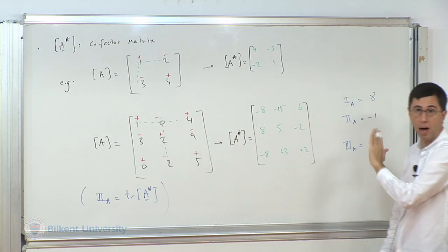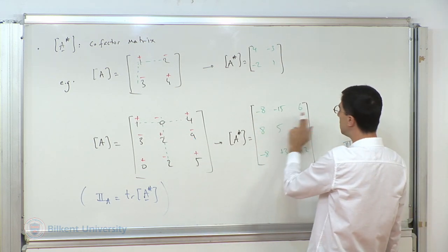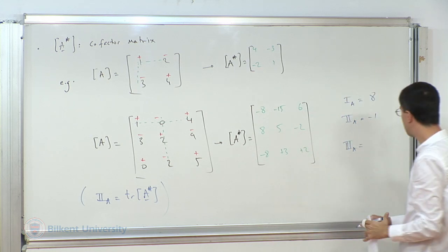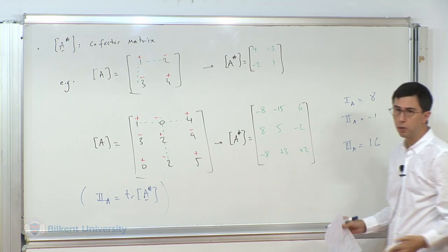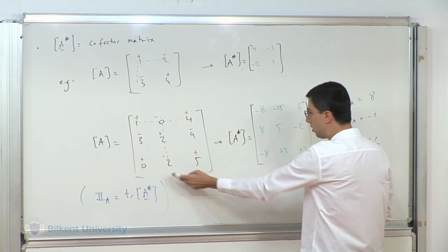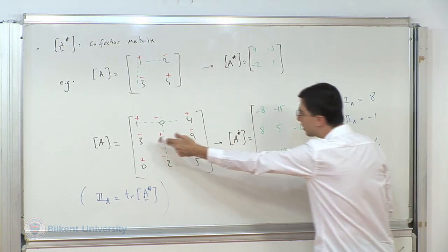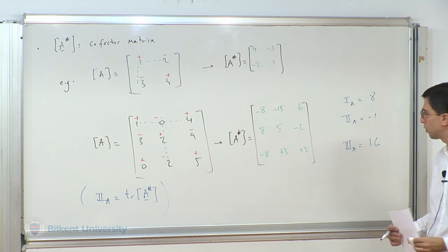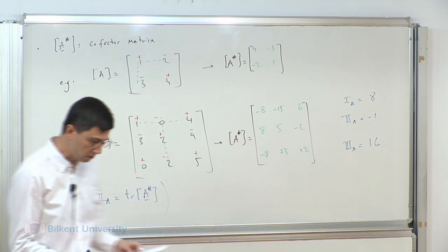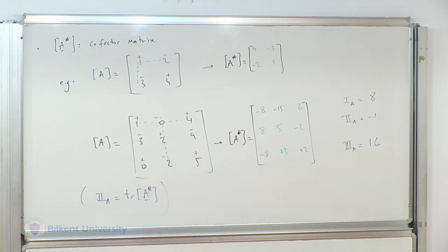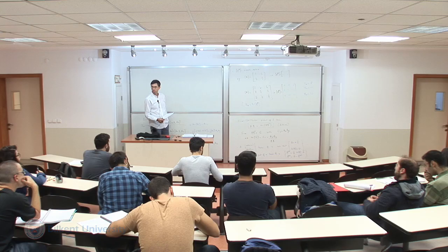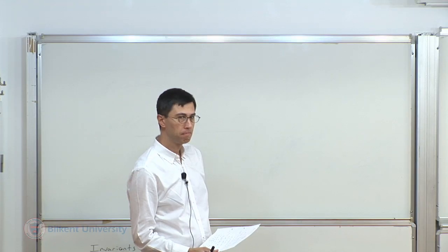A student asks how we can expand the triple product additively. The key is that the triple product is linear in each of its arguments — if B equals B1 minus B2, then the triple product splits into two parts. This follows directly from the definition of the triple product, which you can verify component-wise. With that linearity, the expansion is straightforward.